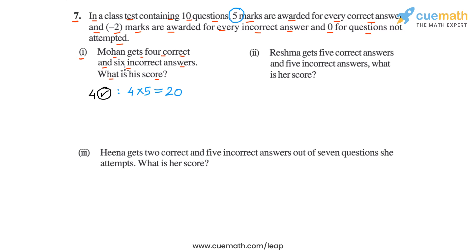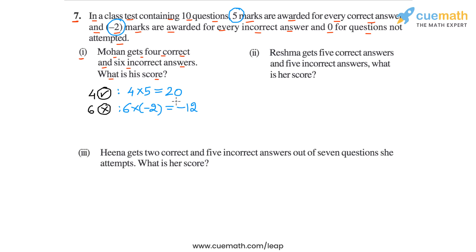Mohan got 6 incorrect answers. For the 6 incorrect answers, how many marks will Mohan get? Every incorrect answer is awarded minus 2 marks, as given in the problem statement. So for the 6 incorrect answers, Mohan will get 6 into minus 2, or minus 12 marks.